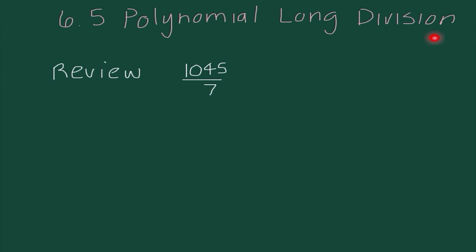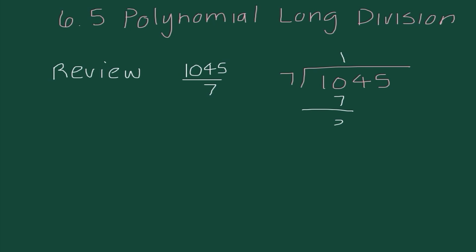Let's look at a problem like 1,045 divided by 7. So I've gone ahead and set up our long division here, and I need to figure out how many times does 7 go into 1? We know 7 does not go into 1, so I need to expand it a little bit further and think how many times does 7 go into 10? We know 7 goes into 10 one time, so I'm going to write 1 up top. Now I'm going to do 1 times 7, and we get 7. Now we subtract, so I get 3 and bring down our next number.